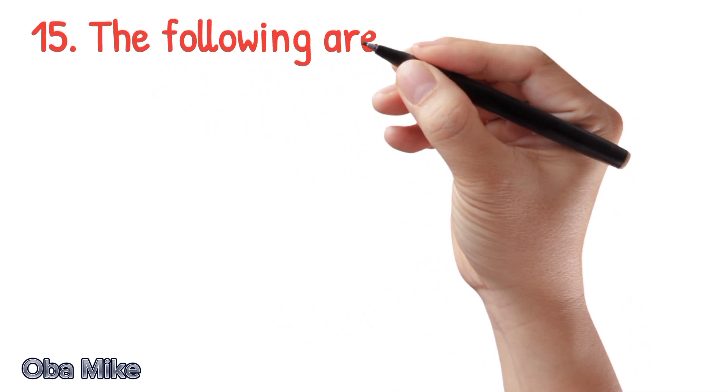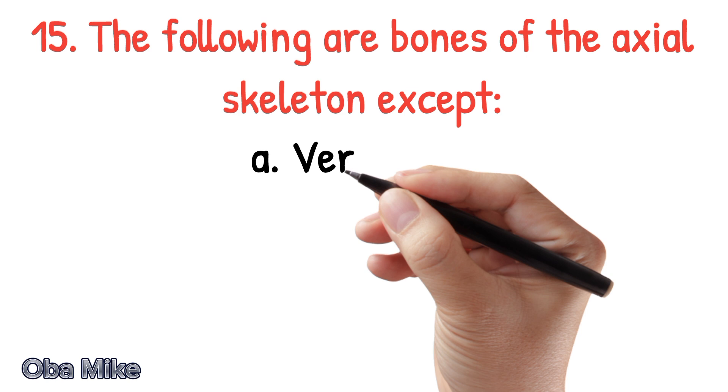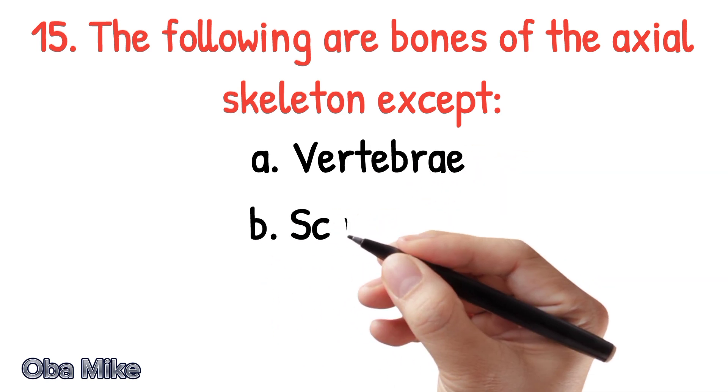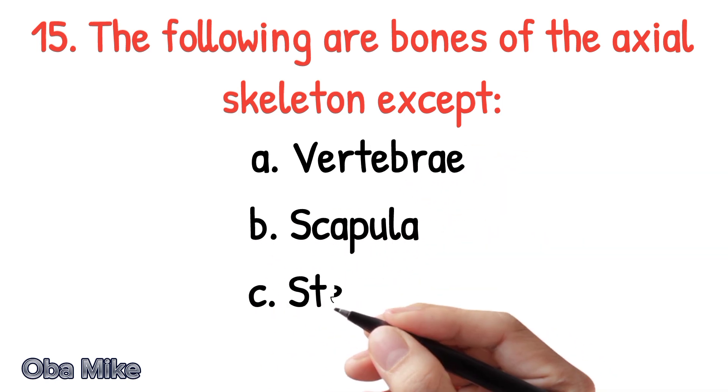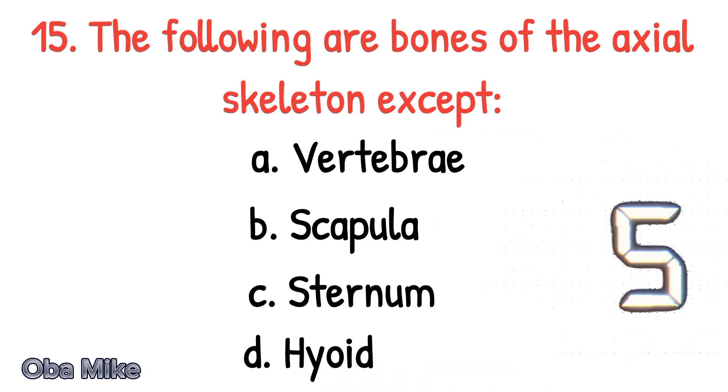Number 15. The following are bones of the axial skeleton except A. Vertebrae, B. Scapula, C. Sternum, D. Hyoid. The correct answer is B. The scapula is not part of the axial skeleton.